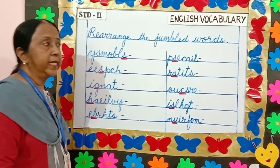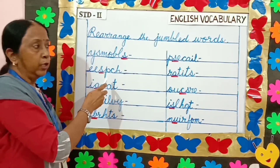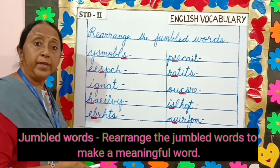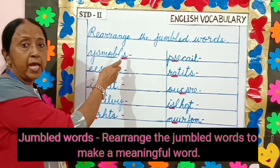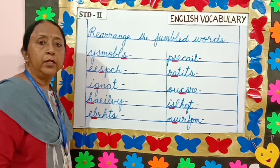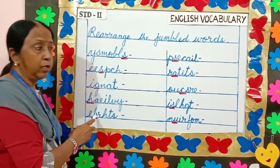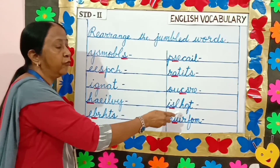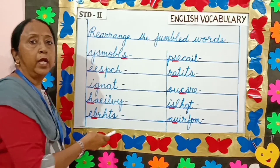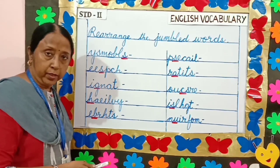Our next topic is rearrange the jumbled words. Children, you have to rearrange these words and make a meaningful word. You can see I have written some words on the board which have no meaning. I have underlined the first letter of each word for you to understand. To solve this, children, you have to learn the spellings from your spelling list thoroughly.